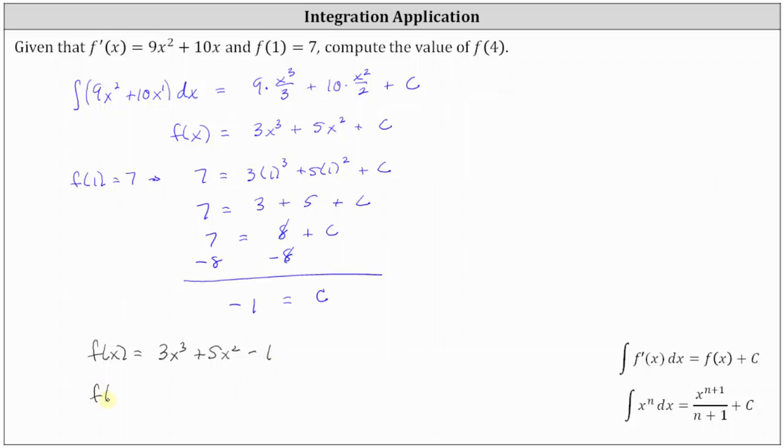f(4) equals 3 times the cube of 4 plus 5 times the square of 4 minus 1, which gives us 3 times 64 plus 5 times 16 minus 1.